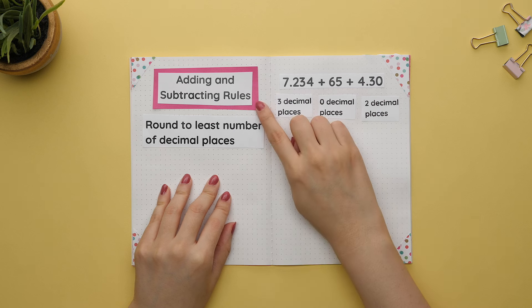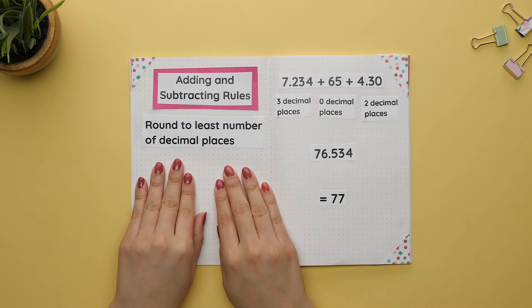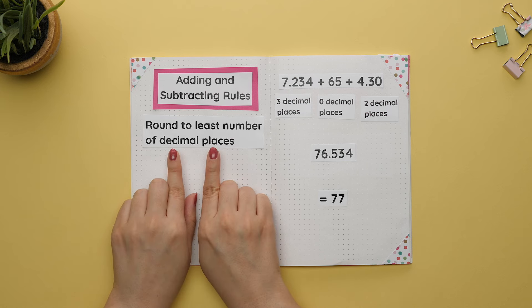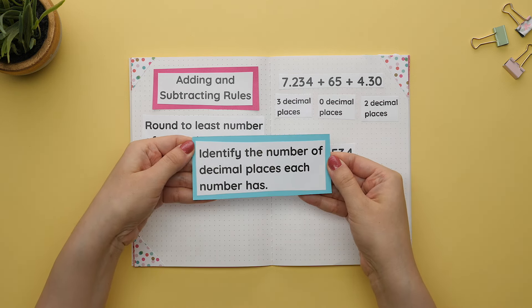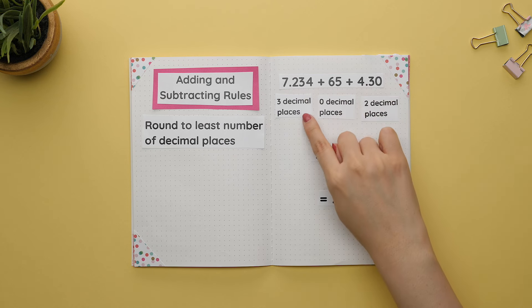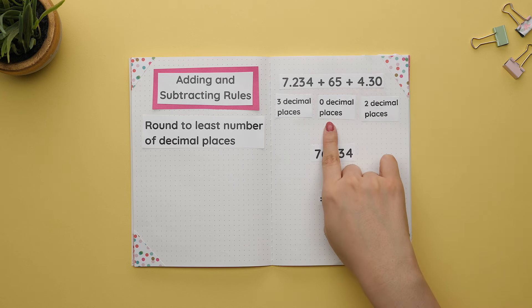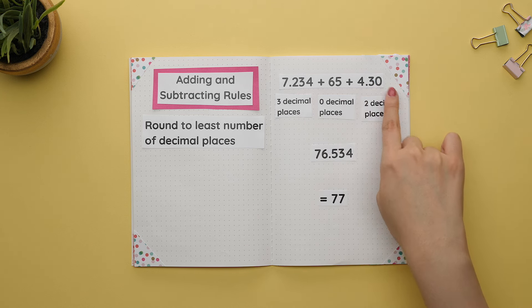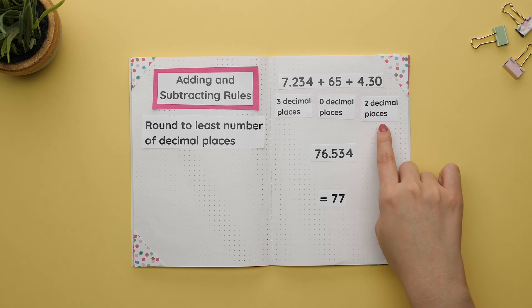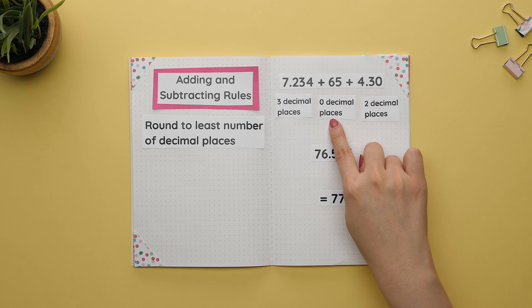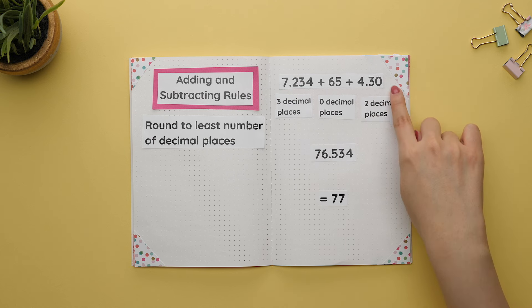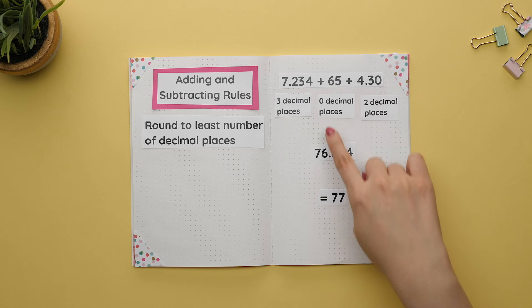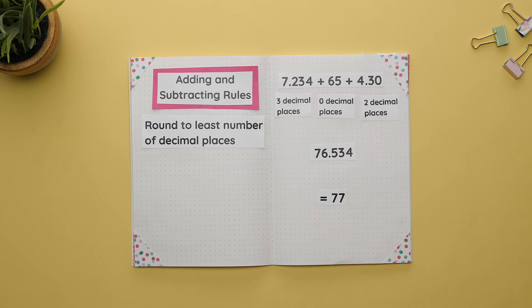Now let's go over the significant figure rules for addition and subtraction. When adding or subtracting numbers, we must always round to the least number of decimal places. Start by identifying the number of decimal places each number has. The first number has three decimal places, the second number has no decimal shown so zero decimal places, and the third number has two decimal places. The least is zero, so our final answer will have zero decimal places. Adding everything together and rounding gives us 77.